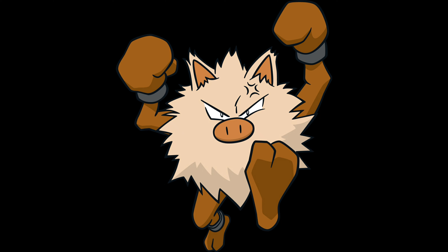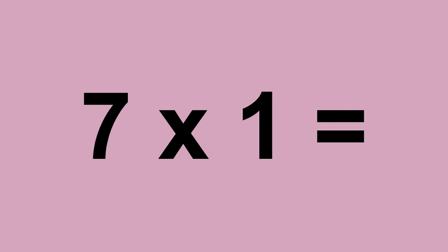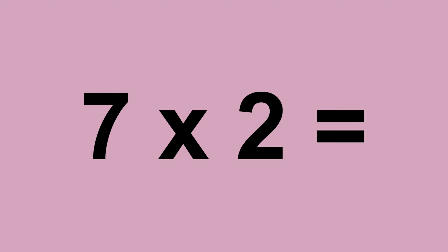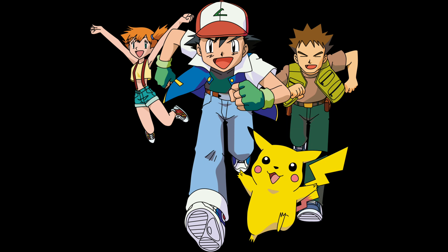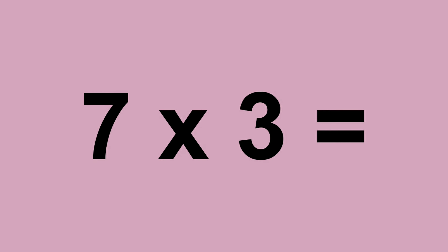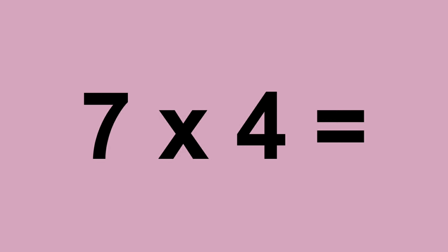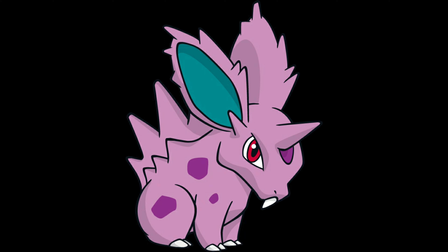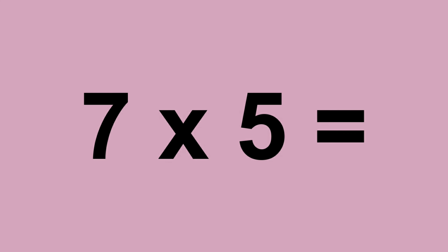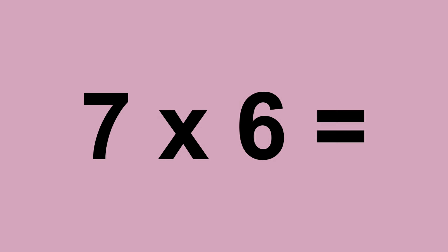Seven times zero equals zero. Seven times one equals seven. Seven times two equals fourteen. Seven times three equals twenty-one. Seven times four equals twenty-eight. Seven times five equals thirty-five. Seven times six equals forty-two.